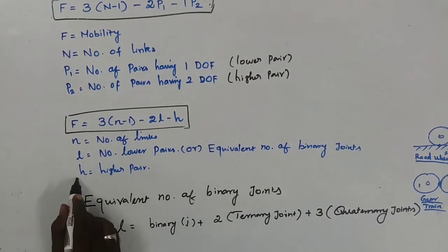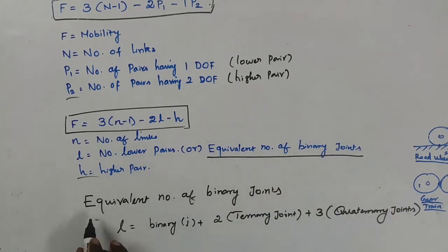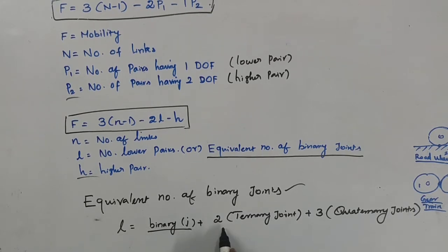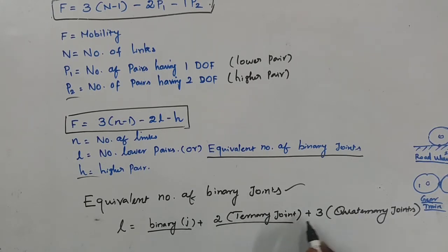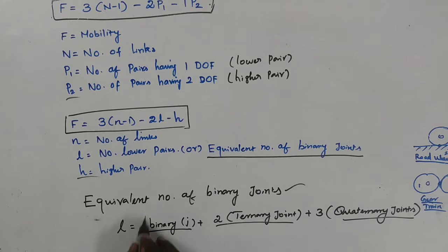The equivalent number of binary joints L equals: number of binary joints plus 2 times the number of ternary joints plus 3 times the number of quaternary joints. This summation gives the equivalent number of binary joints used in the mobility formula.